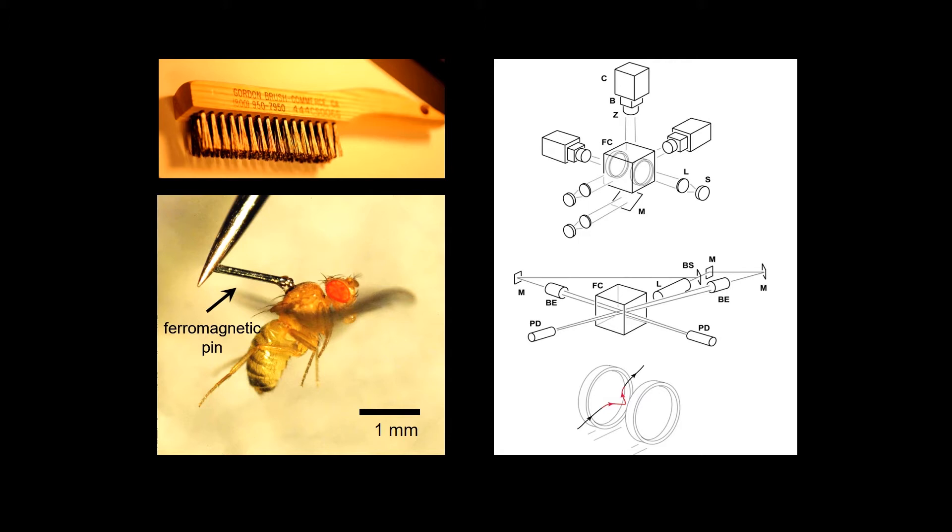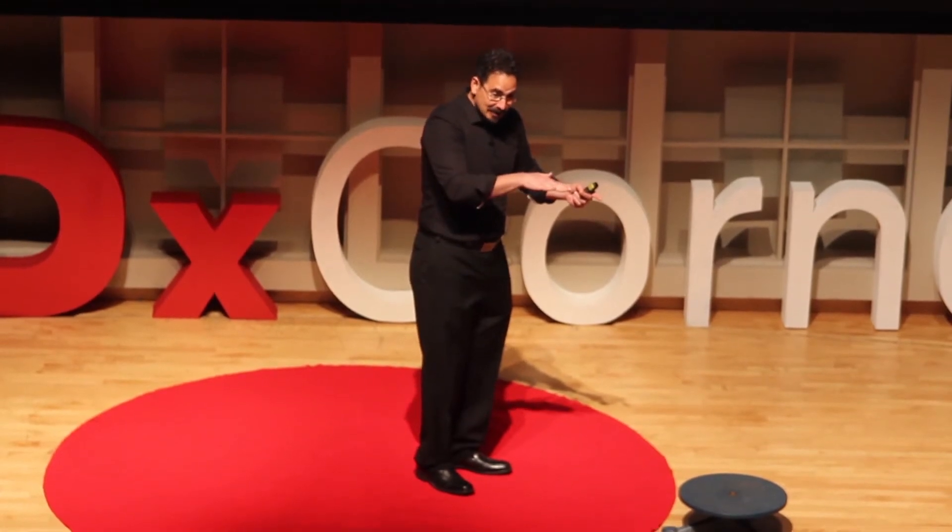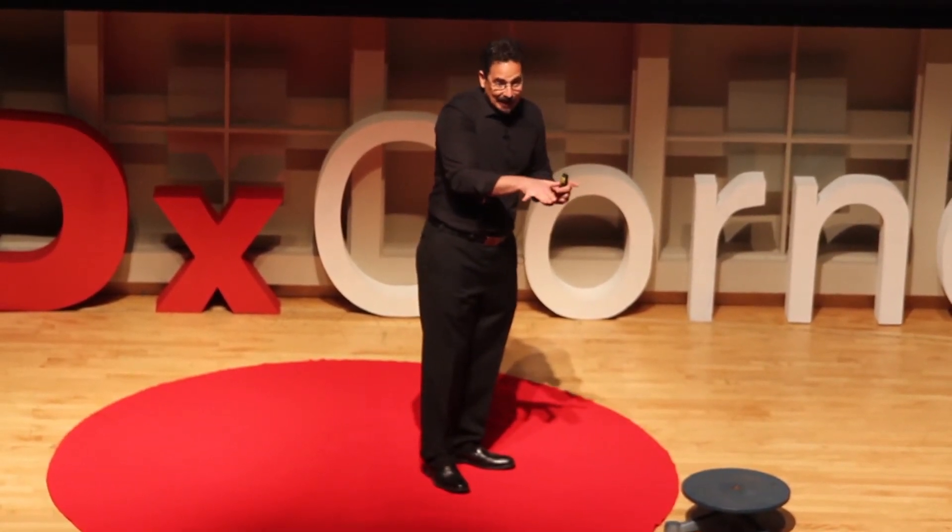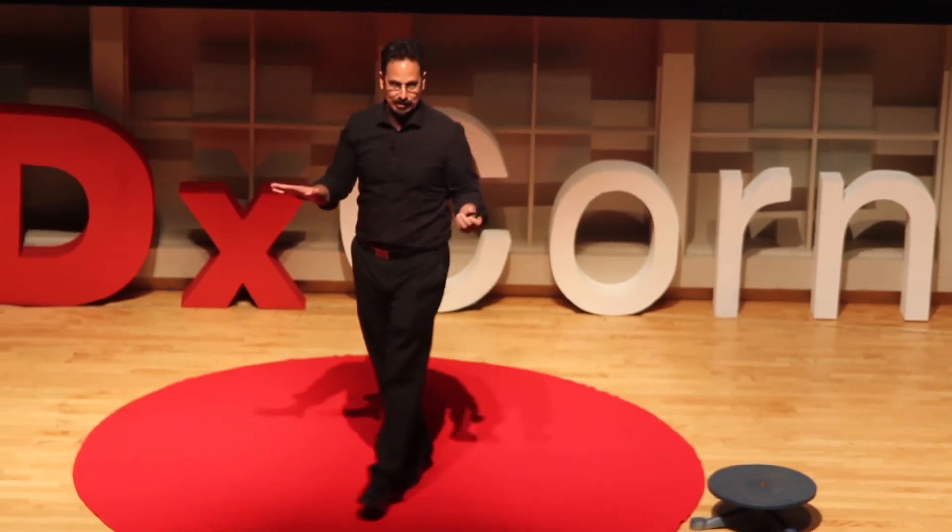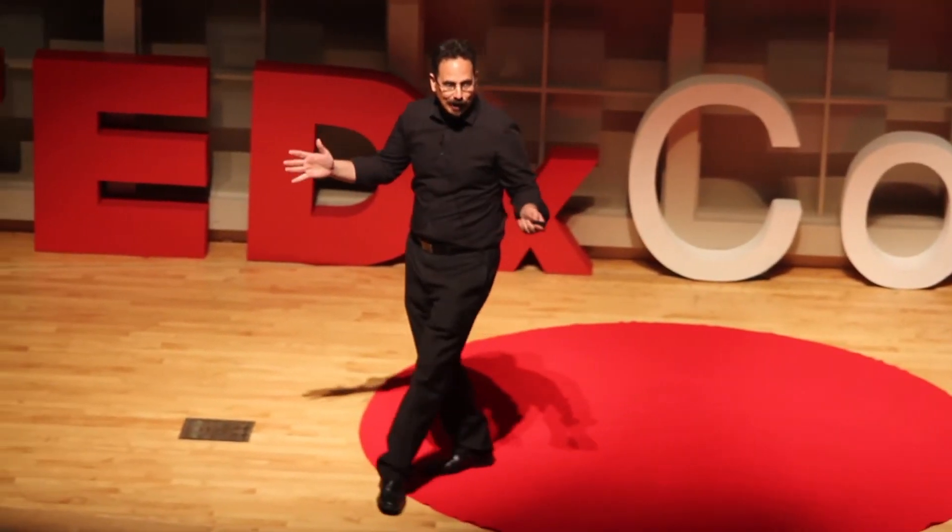But when the fly is there, we also trigger a pair of electromagnets. So, the experiment is the following. The fly comes in. We trigger the cameras to record. We simultaneously apply a magnetic field. The magnet on the fly's back starts to rotate to align with the magnetic field. And that gives the fly a mid-air perturbation. And then we see what happens.